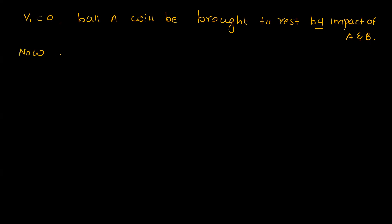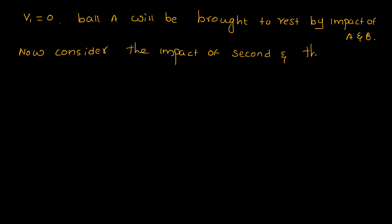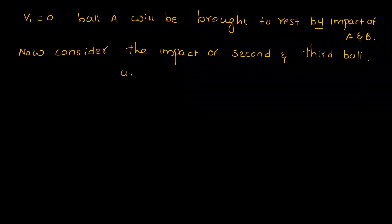Since V1 = 0, ball A (2 kg) is brought to rest by the impact of A and B. Now consider the impact of the second and third ball. The initial velocity of ball B after first impact is U2* = 8 m/s, and U3 = 2 m/s.